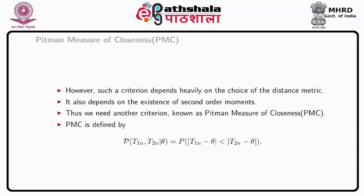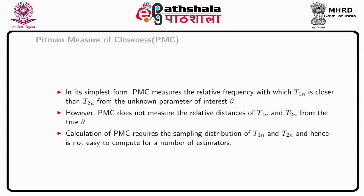Thus, we need another criterion known as Pitman Measure of Closeness, abbreviated as PMC. This is defined by the probability measure of T1n and T2n given theta, equal to the probability that |T1n - theta| < |T2n - theta|. In its simplest form, PMC measures the relative frequency with which T1n is closer than T2n to the unknown parameter of interest theta. However, PMC does not measure the relative distance of T1n and T2n from the true value theta, and calculation of PMC requires the sampling distribution of T1n and T2n, hence is not easy to compute for a number of estimators.